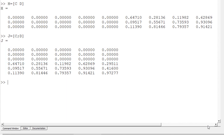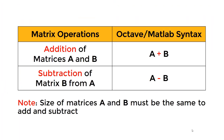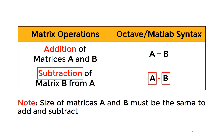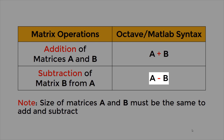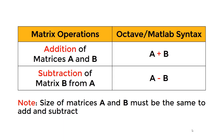Check the size of a matrix using the 'size' function, which has two outputs — one for row size and one for column size. Save both by typing '[row, col] = size(H)' — for example, row size 3 and column size 10. Use the 'length' function to get the larger dimension only, so 'length(H)' returns 10. For matrix addition and subtraction, matrices A and B must be the same size; use plus or minus sign between them. The resulting matrix is the same size, and sizes must match or you'll get an error message.